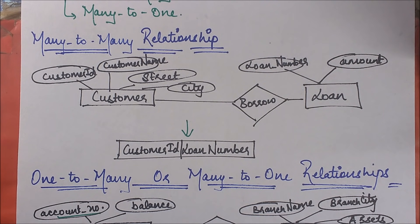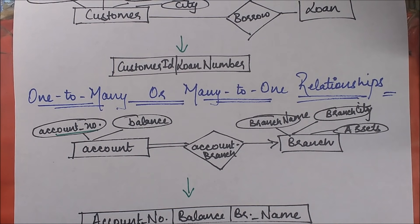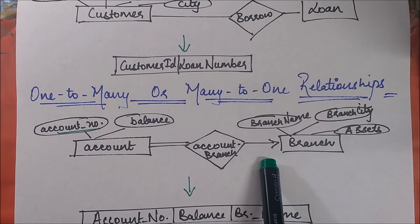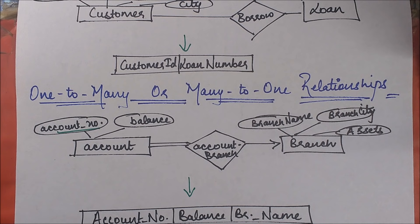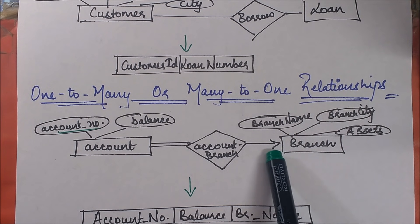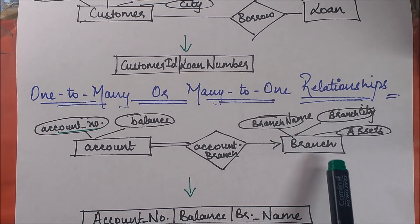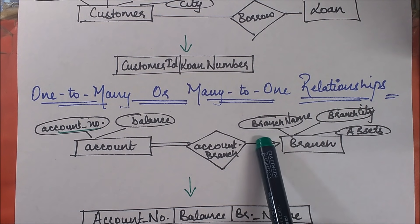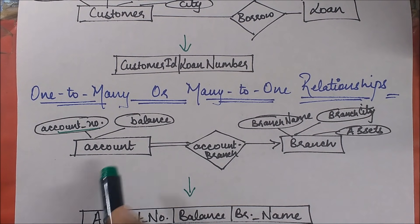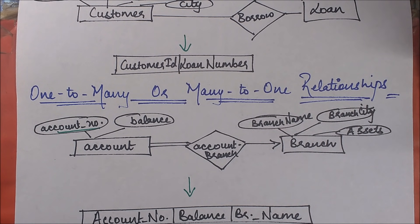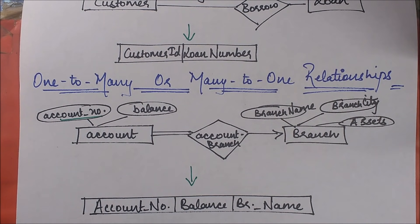When we have a one-to-many or many-to-one relationship, the interesting case is when we have total participation from one end and partial participation from the other. The entity with partial participation contributes its primary key, while we take all the other attributes of the entity which is in total participation into the relationship, along with the primary key of the other entity. This combination becomes your new table.